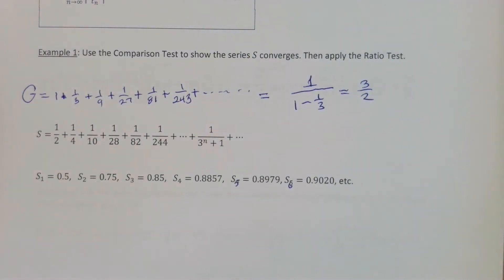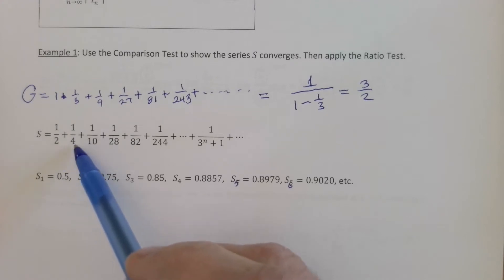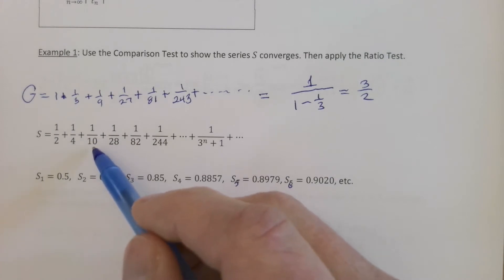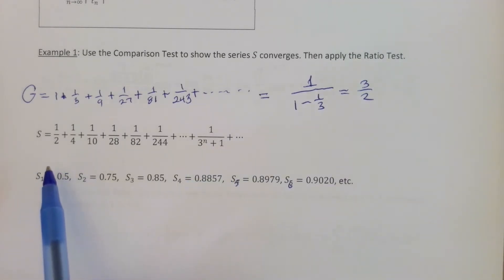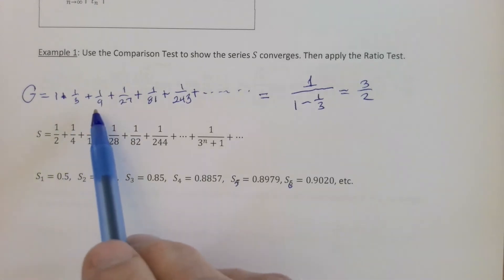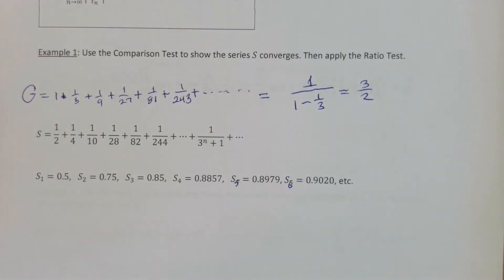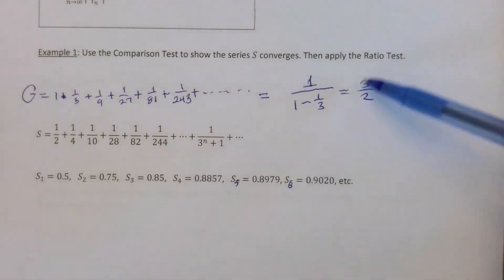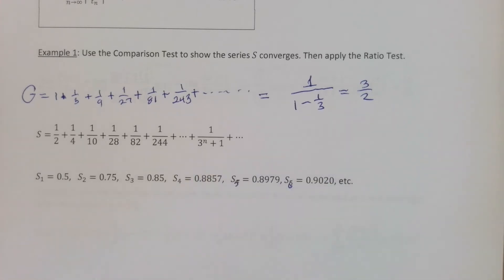Even though series S is not geometric, you can see each of its terms is related to the corresponding term in G. For instance, a term with denominator just 1 larger than 3, and 1/10 has a divisor just 1 larger than 9. Each term of S is smaller than the corresponding term in G — 1/28 is smaller than 1/27, 1/82 is smaller than 1/81. By comparison, S has to add up to something smaller than G, so S is bounded — it has to add up to something less than 1.5 — and therefore it converges to some limit.